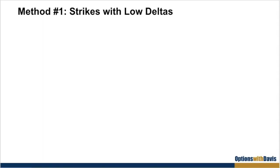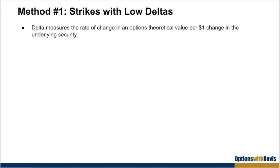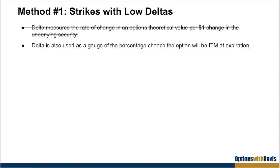The first method is to choose strikes with low deltas. Now if you don't already know, delta is the measure of the rate of change in an option's theoretical value per dollar change in the underlying security. But for the purpose of a covered call, what we want to know is that delta is also used as a gauge of the percentage chance that the option will be in the money at expiration.